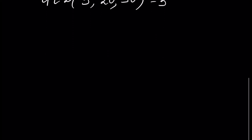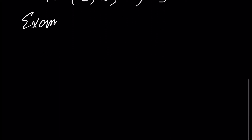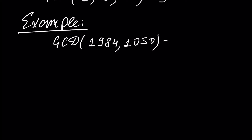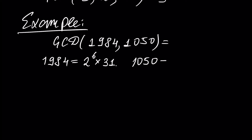Let's see this in an example. Let's find the GCD of numbers 1984 and 1050 using prime number factorization. We write 1984 as two to the power of six times thirty-one. And 1050 is equal to two times three times five squared times seven.